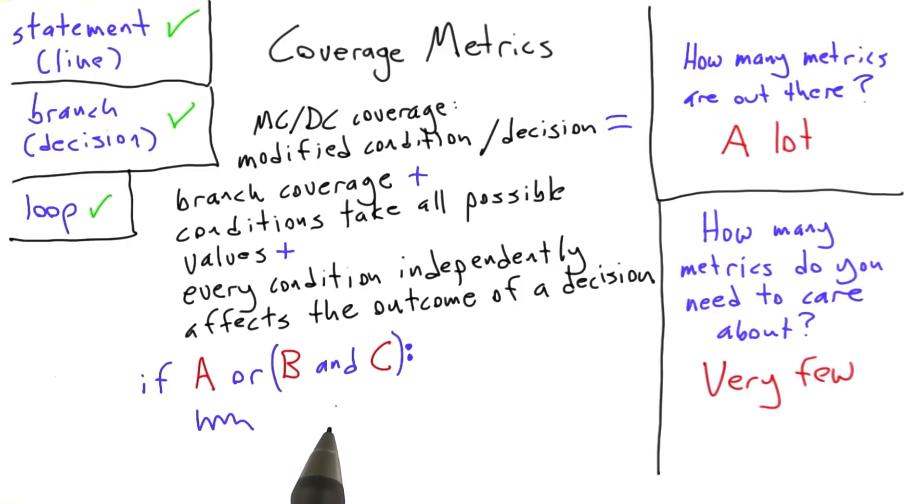And so now let's look at what it takes to get full MCDC coverage of this bit of code. The first thing we can see is that we're going to need to test each of the variables with both their true and false values, because conditions—that is to say the conditions are A, B, and C here—need to take on all possible values. So we can see that each of the conditions is going to need to be assigned both the true value and the false value during the test that we run. Now the other part of MCDC coverage, that is, does every condition independently affect the outcome of a decision, is going to be a little harder to deal with.